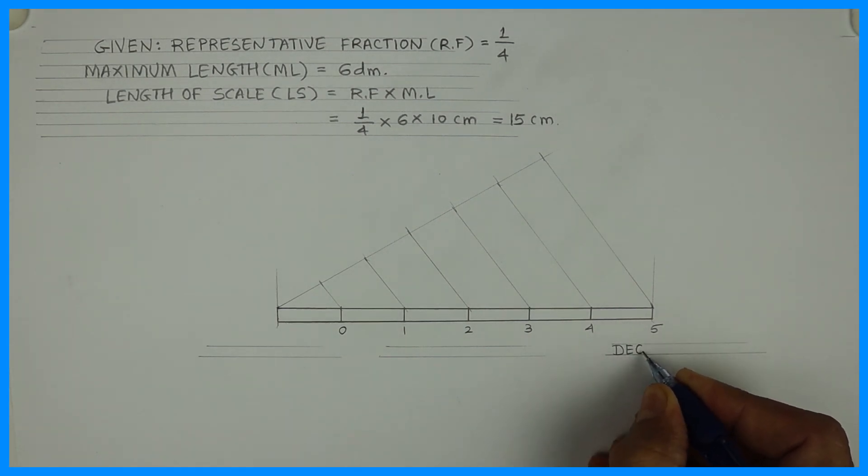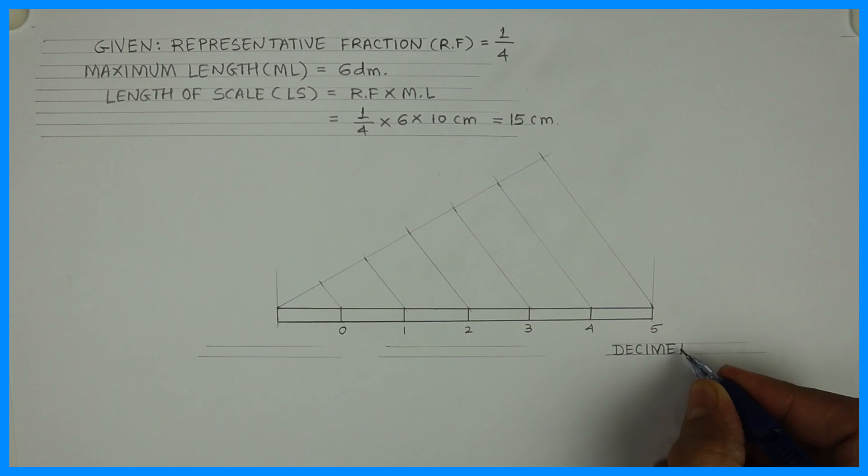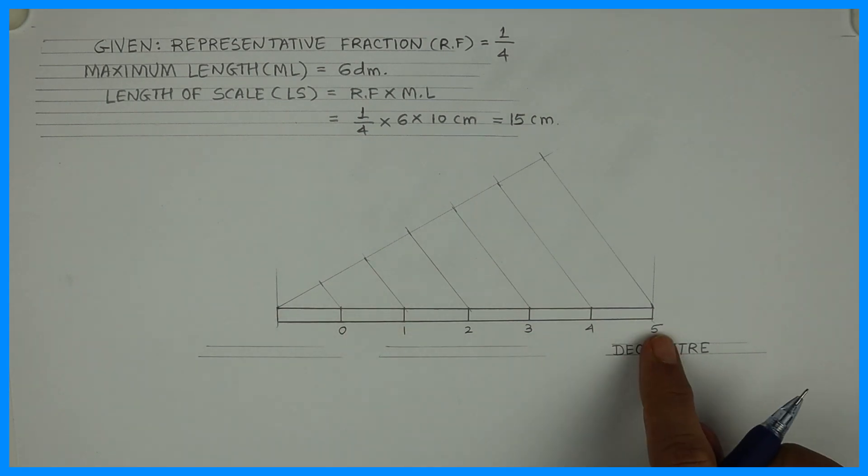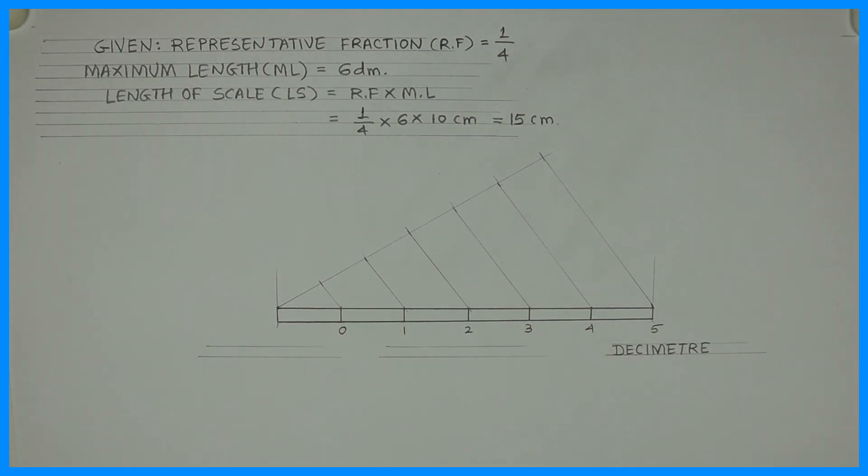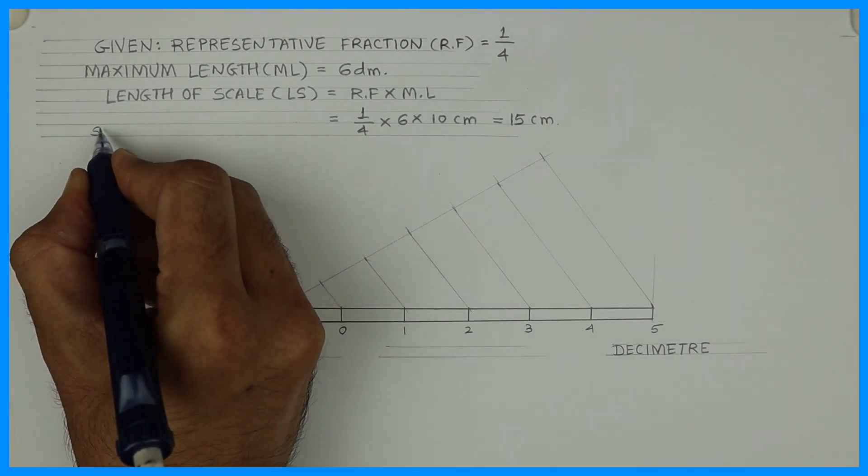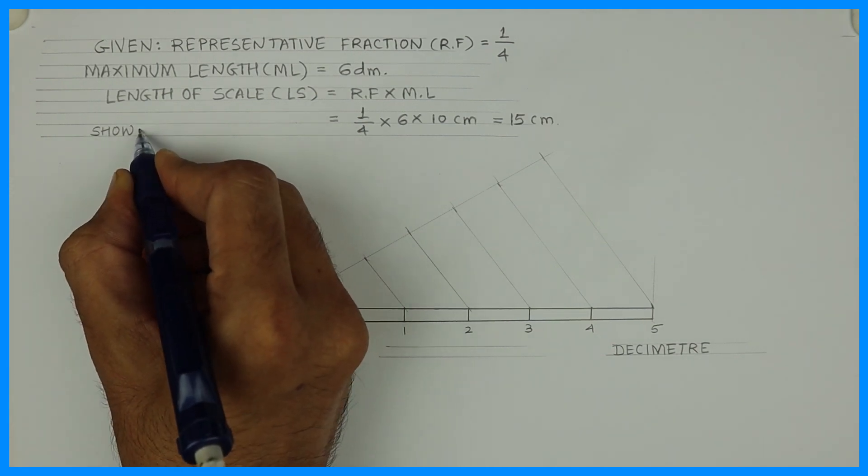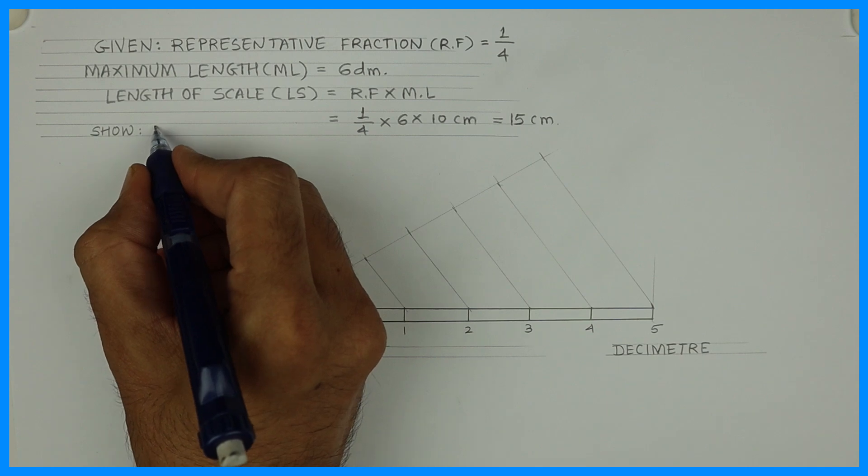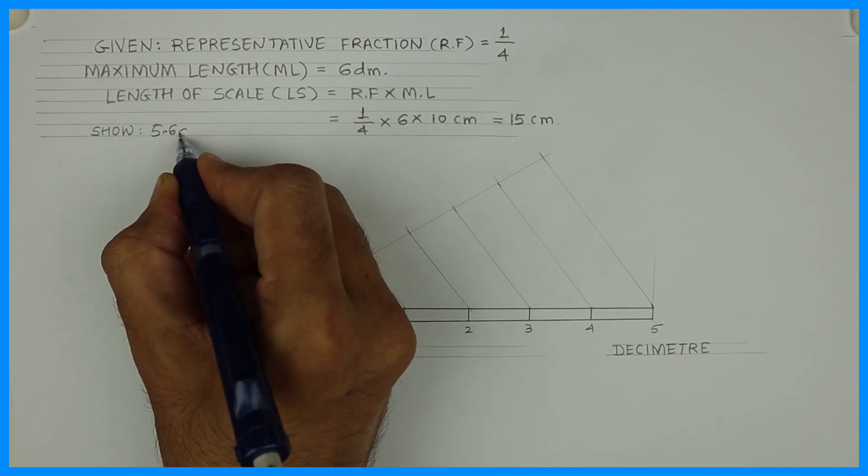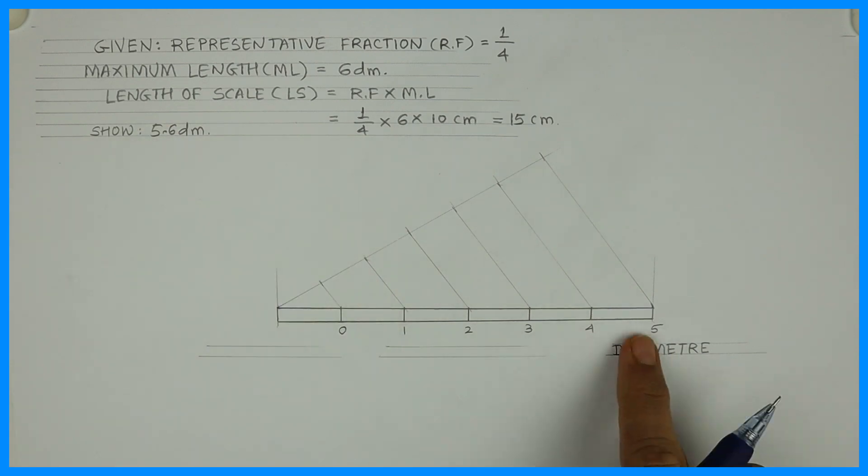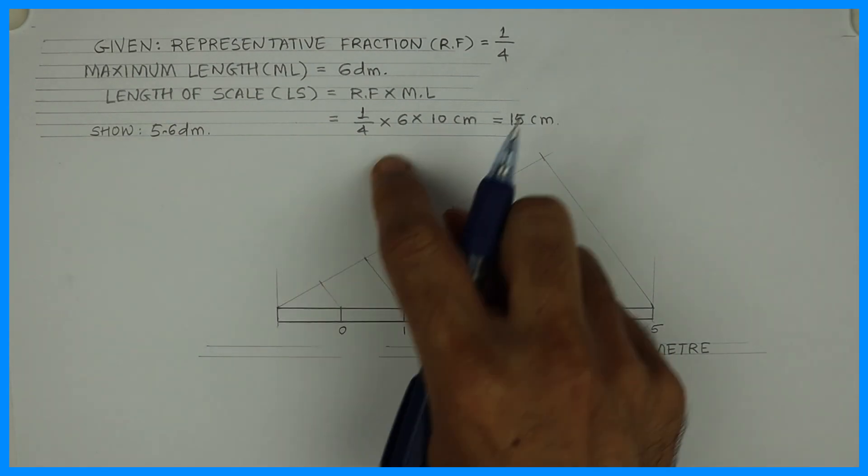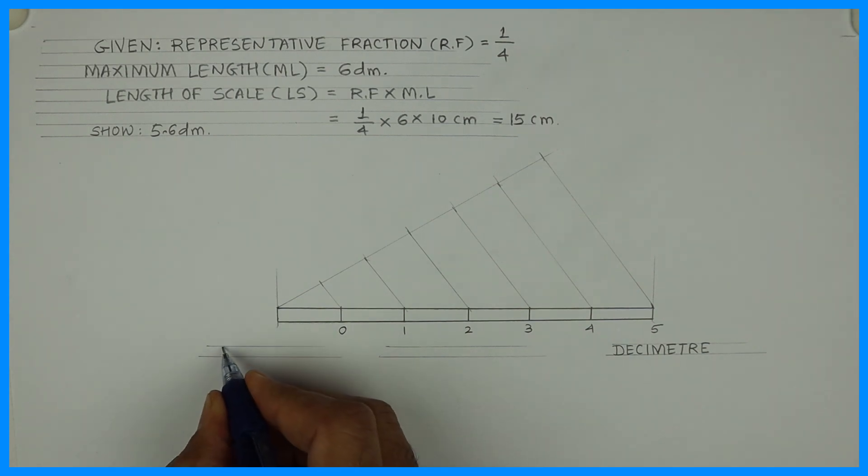Now what I'm going to do? I'm going to divide one part of decimeter into 10 part for centimeter because they want us to draw, they want us to show centimeter also. So this part 0 to 1, see it is. Over here we have to show 5.6 decimeter. So 5 decimeter and 6 centimeter. See 5 decimeter we have. For 6 centimeter, we need to divide first block into 10 part. So then we will get centimeter over there.